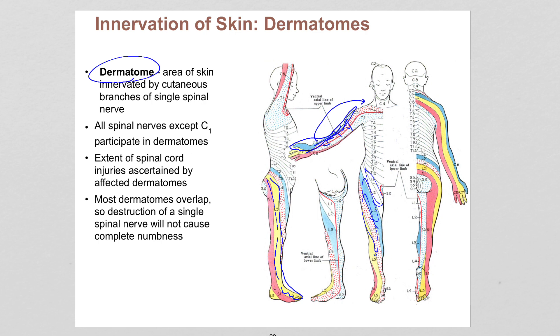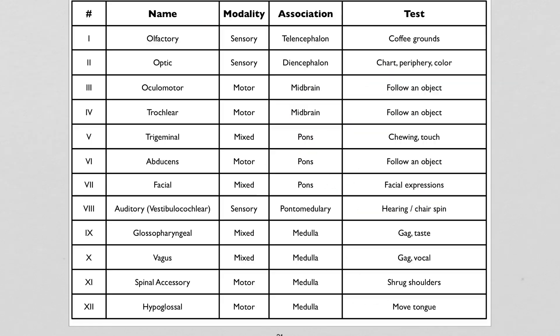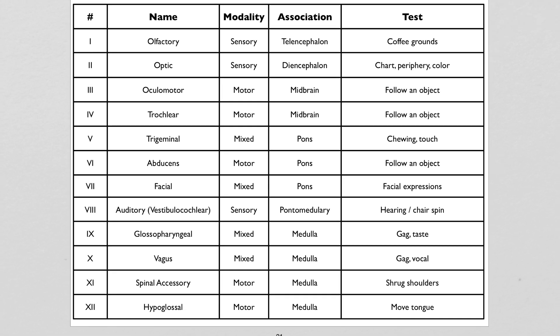The other set of peripheral nerves — the ones that don't come off the spinal cord — are cranial nerves. There are 12 of them, and for each one we can ask a couple of questions: the name tells you something about its function; the modality asks whether it's sensory, motor, or mixed (sensory and motor); and the association tells you where in the CNS it tracks to. The first couple of cranial nerves start up at the cerebrum with the olfactory nerve, and they're numbered in order going deeper — through the midbrain, through the pons, and eventually down to the medulla at the base of the brain.